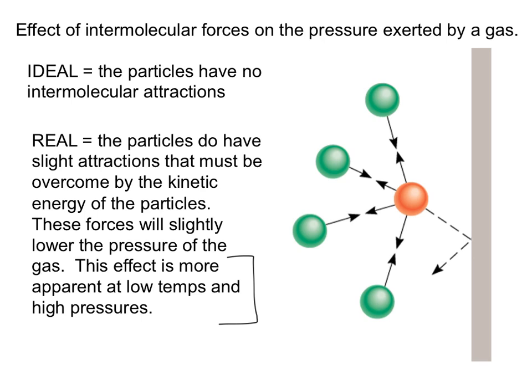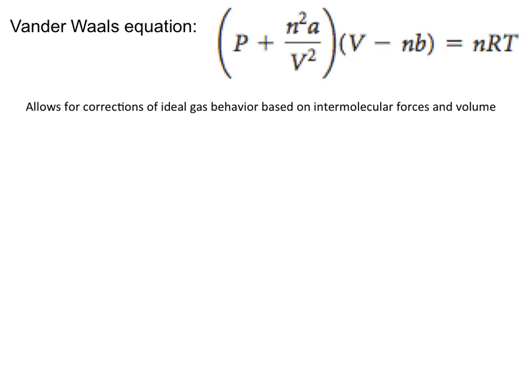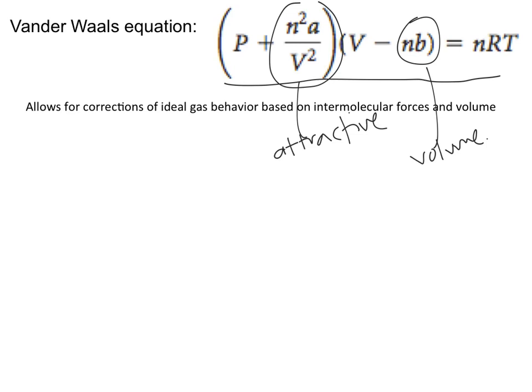The Van der Waals equation that you see here basically accounts for the corrections in both pressure and volume that we just talked about with respect to gases actually behaving in a real way versus in an ideal way. We have two new factors here. We have our value here, which accounts for the attractive forces that occur between molecules of real gases. And this factor right here actually accounts for the volume that the particles of gases in real gases actually take up.